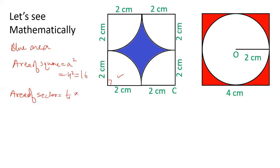1 by 4 π r squared. That is 1 by 4 π into 2 squared. So, 1 by 4 π into 4, that is π. Area of this is π. This is also π. This is also π. This is also π. So, area of 4 sectors is equals to 4π. And blue area is equals to area of square minus area of 4 sectors. 16 minus 4π.